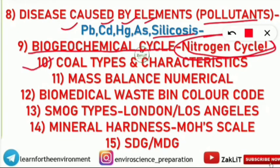Number ten is coal types and their characteristics — anthracite, lignite, peat, and others. You should know their characteristics: which has the highest amount of moisture, which is good quality coal, and which has the highest sulfur content. These things are very frequently asked. Coal types and their characteristics are very, very important.